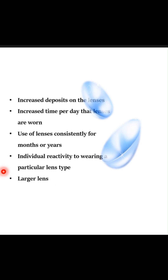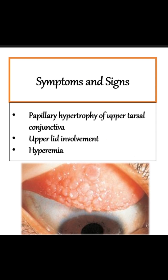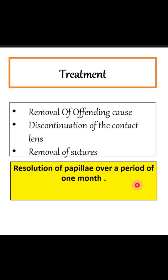Signs and symptoms are very similar to those of vernal keratoconjunctivitis (VKC). Treatment involves removal of the offending cause — discontinuation of contact lenses, discontinuation of prosthetic shell usage, and removal of sutures. Simply by removing the offending cause, resolution of papillae can occur over a period of one month.